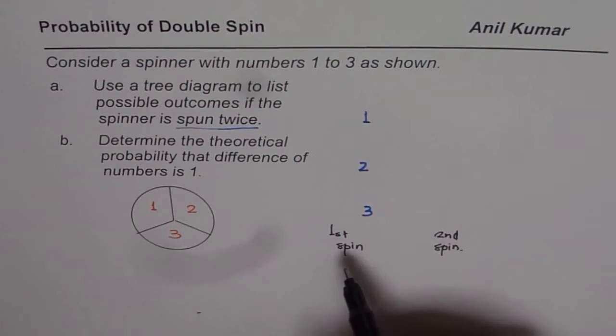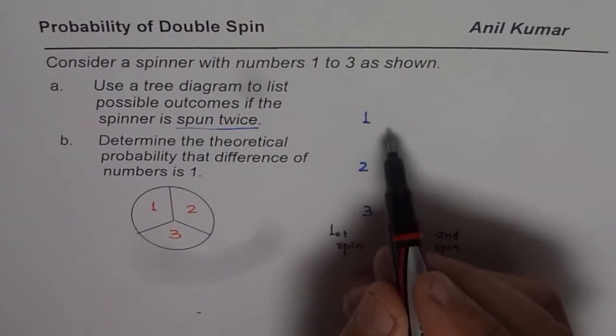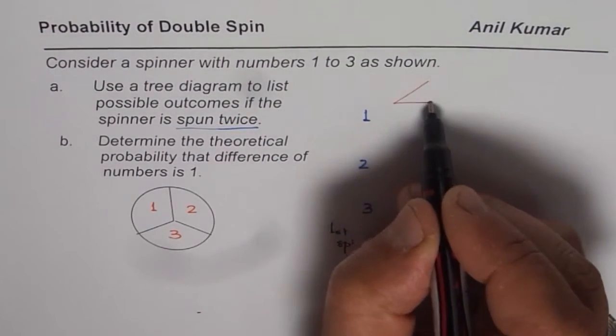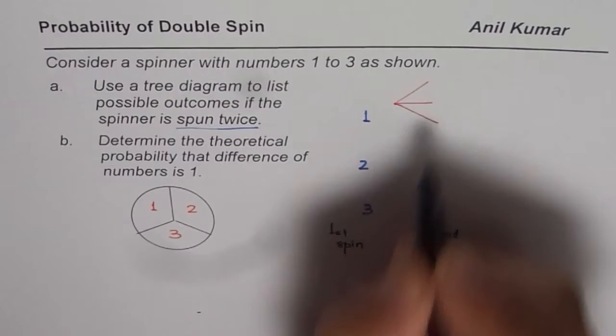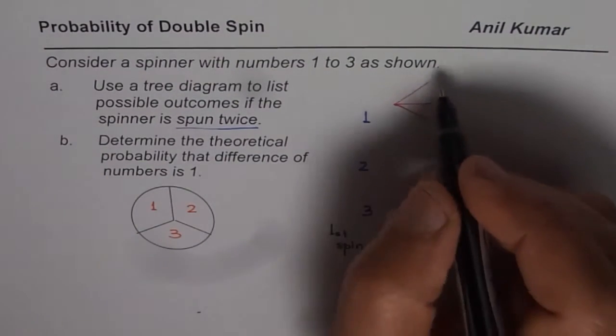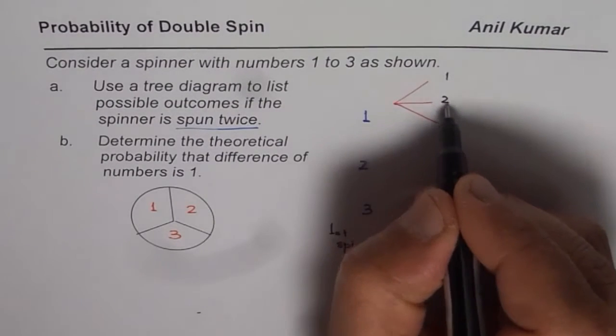Now let us say, in the first spin, we have got 1, then in the second spin, we could get either 1 or we could get 2 or we could get 3, you get the idea. So we could get 1, 2 or 3.